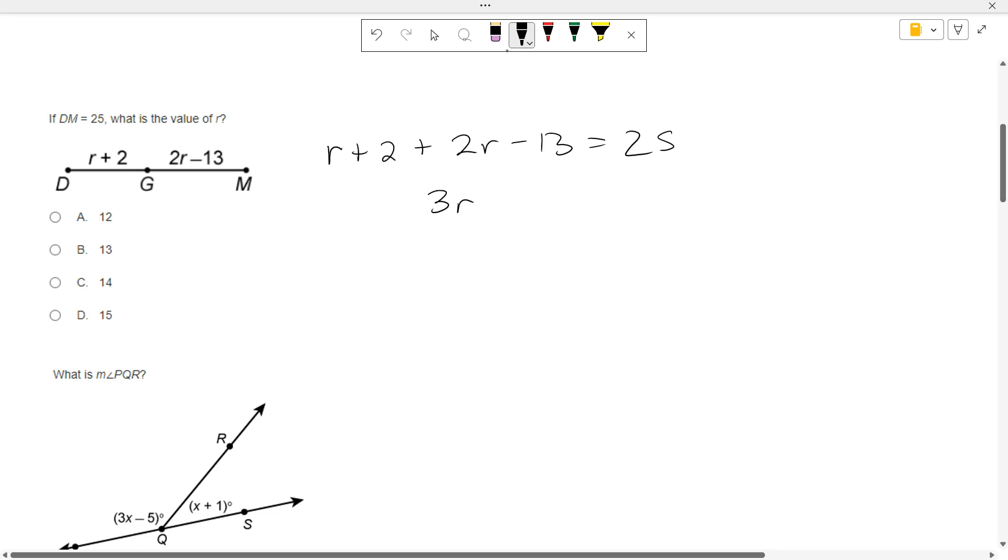2 minus 13 is negative 11 equals 25. What do we do to both sides? Add 11. 3R equals 36. R equals 12. It wants the value of R, not what DG or GM is.